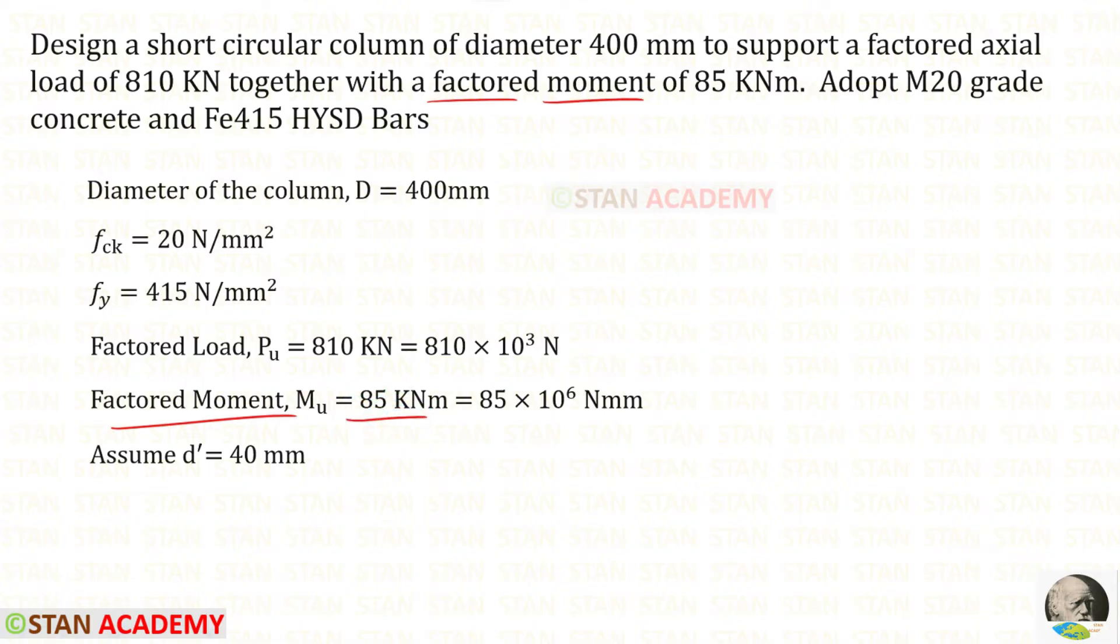We can convert that into newton millimeter. 1K is 1000, 1 meter is 1000 millimeter, 1000 into 1000 it will be 10 power 6. Adopt M20 grade concrete and FE 415 bars. So f_ck is 20 and f_y is 415. For our own comfort, let us keep the effective cover D' as 40 millimeter.